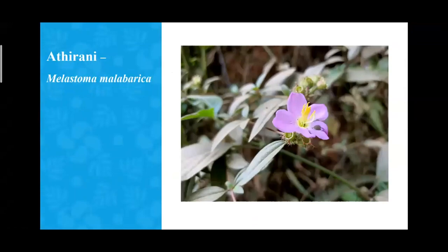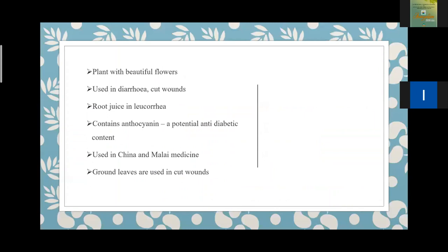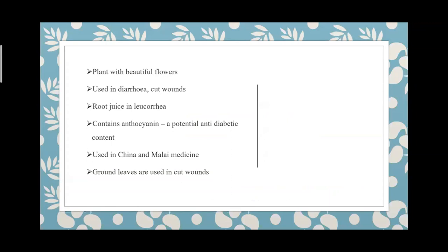Adhirani — Melastoma malabathricum — has a very beautiful flower and is endemic to such ecosystems. It is used for diarrhea and cut wounds, having Sandhanya property. The root juice is used for leucorrhea. It has potential anti-diabetic activity. In China and Malay medicine it is used for cut wounds and diarrhea.